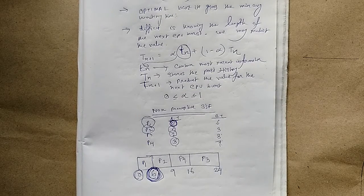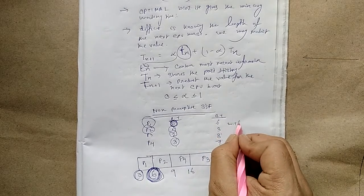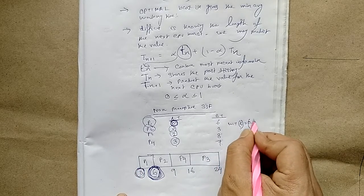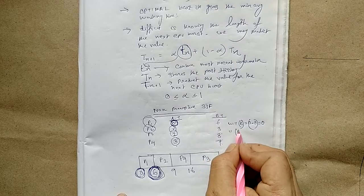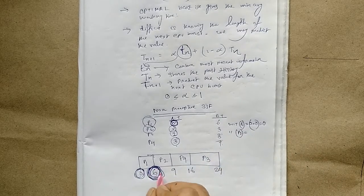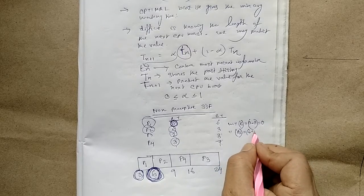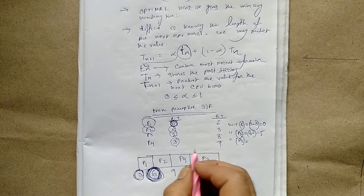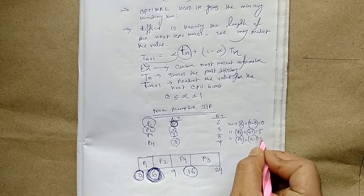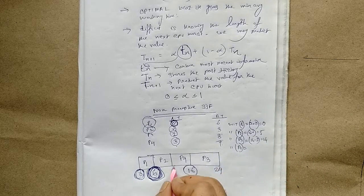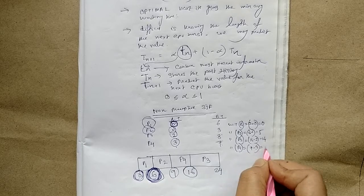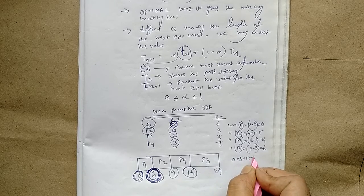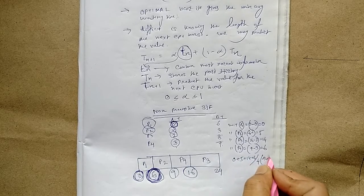Waiting times for Non-preemptive SJF: P1 = 0 − 0 = 0; P2 = 6 − 1 = 5; P3 = 16 − 2 = 14; P4 = 9 − 3 = 6. Average waiting time = (0 + 5 + 14 + 6) / 4 = 6.25 seconds.